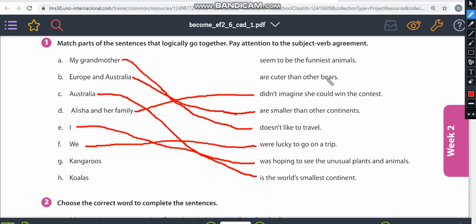The only bear here or bear like here is koala. Kangaroos doesn't look like bears. So koalas are cuter than other bears. And kangaroos seem to be the funniest animals. Okay? So these are the answers. You are going to stay a little on this page so you can catch it. Then I'm going to erase it.